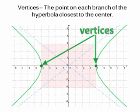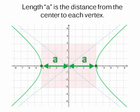Vertices are the points that lie on the hyperbola closest to the center. Vertices is plural for the word vertex. We talked about vertex when we talked about parabolas. Notice that the vertices are located where the hyperbola touches the edge of the reference box. Length a is the distance from the center to each vertex. In the standard form of the equation, a squared is found in the first term.